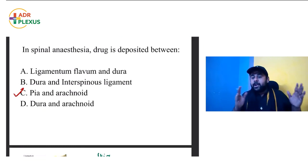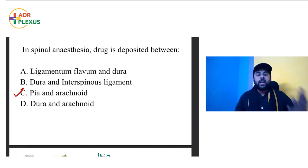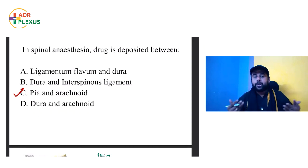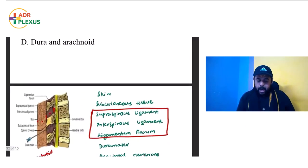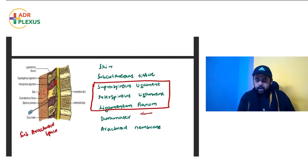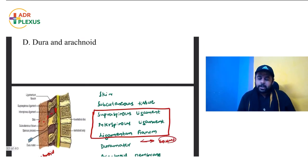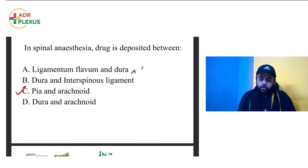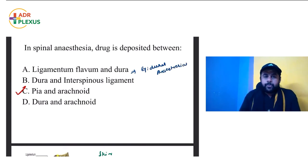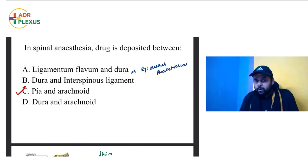In epidural anesthesia, the drug is deposited above the dura — between ligamentum flavum and dura mater. The needle stops before piercing the dura. This is the key difference: spinal anesthesia deposits drug between pia and arachnoid (subarachnoid space), while epidural deposits it between ligamentum flavum and dura.